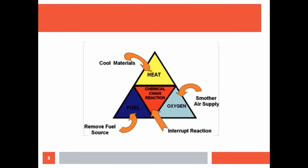The third method of extinguishing fire is by cutting off the air supply. The air supplied to a burning substance can be cut off in a number of ways, such as covering the burning substance with carbon dioxide, sand, a blanket, or a damp cloth.